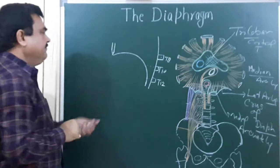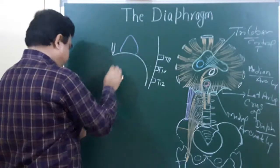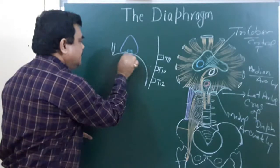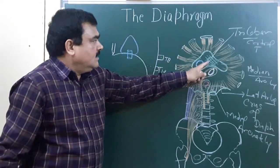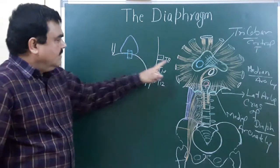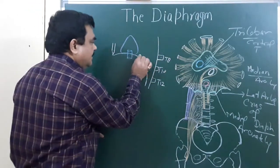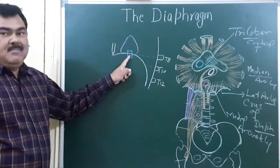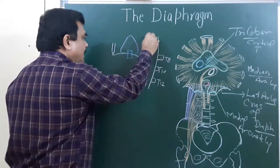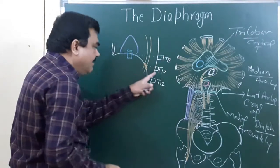Here is the position of the pericardium and heart. This opening — this part — is the central tendon, the trilobar part. This central tendon is pierced by the inferior vena cava. The inferior vena cava lies at the level of T8 vertebra; it pierces the diaphragm at the level of T8. The structure that is the esophagus pierces the diaphragm at the level of T10 vertebra.